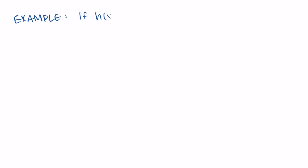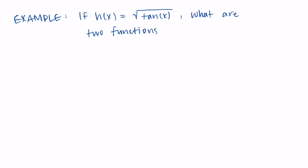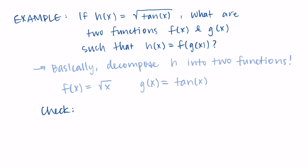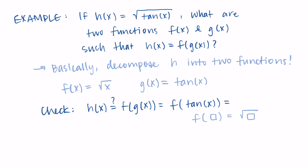Now we're going to practice decomposing functions, which might be a little new. If h of x is the square root of tangent of x, what are two functions f and g such that h equals f of g of x? We can pick f to be the square root of x and g to be tangent of x. Checking: f of tangent of x equals the square root of tangent of x — which is exactly h. So the outside function is square root of x and the inside function is tangent of x.